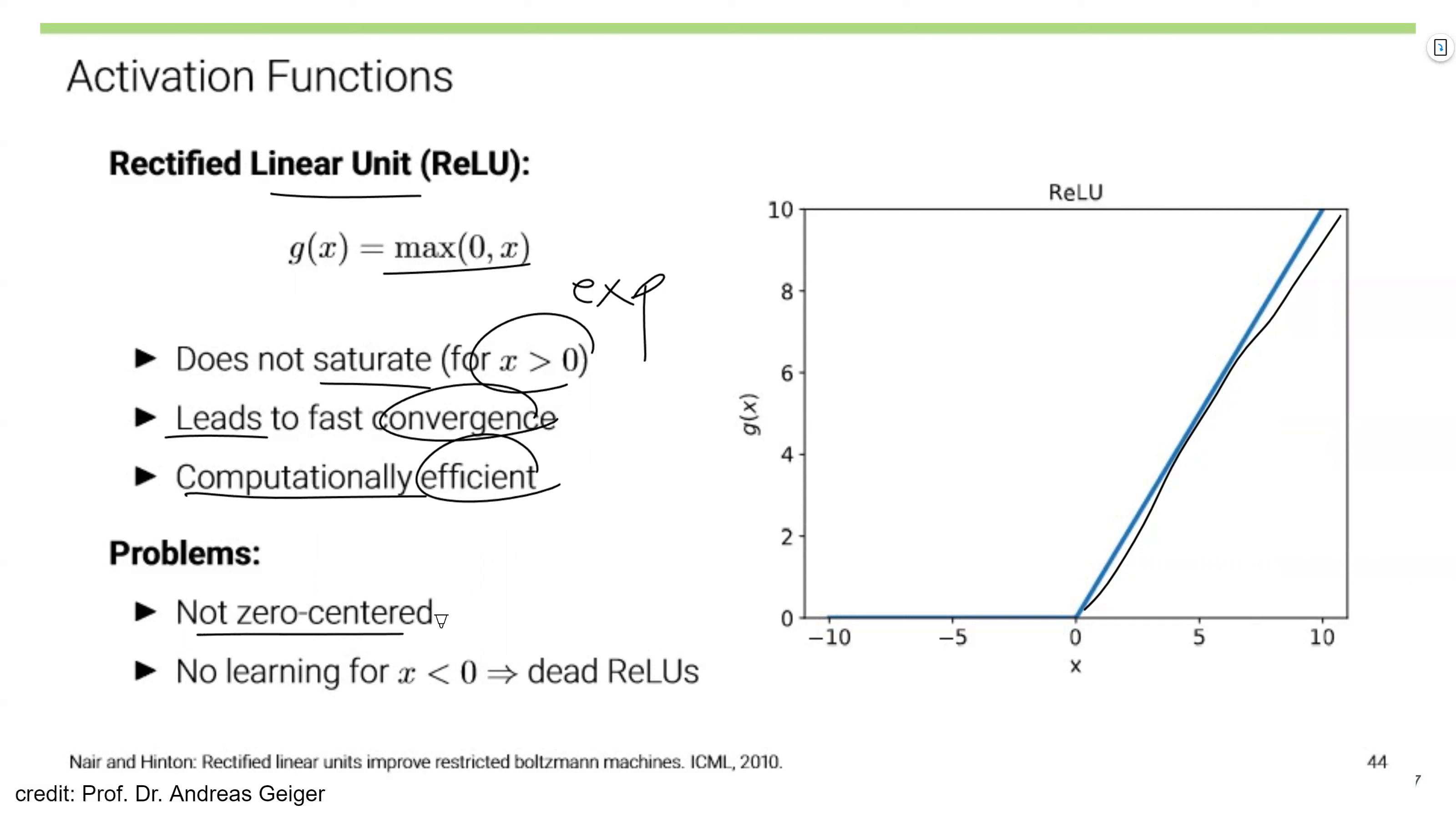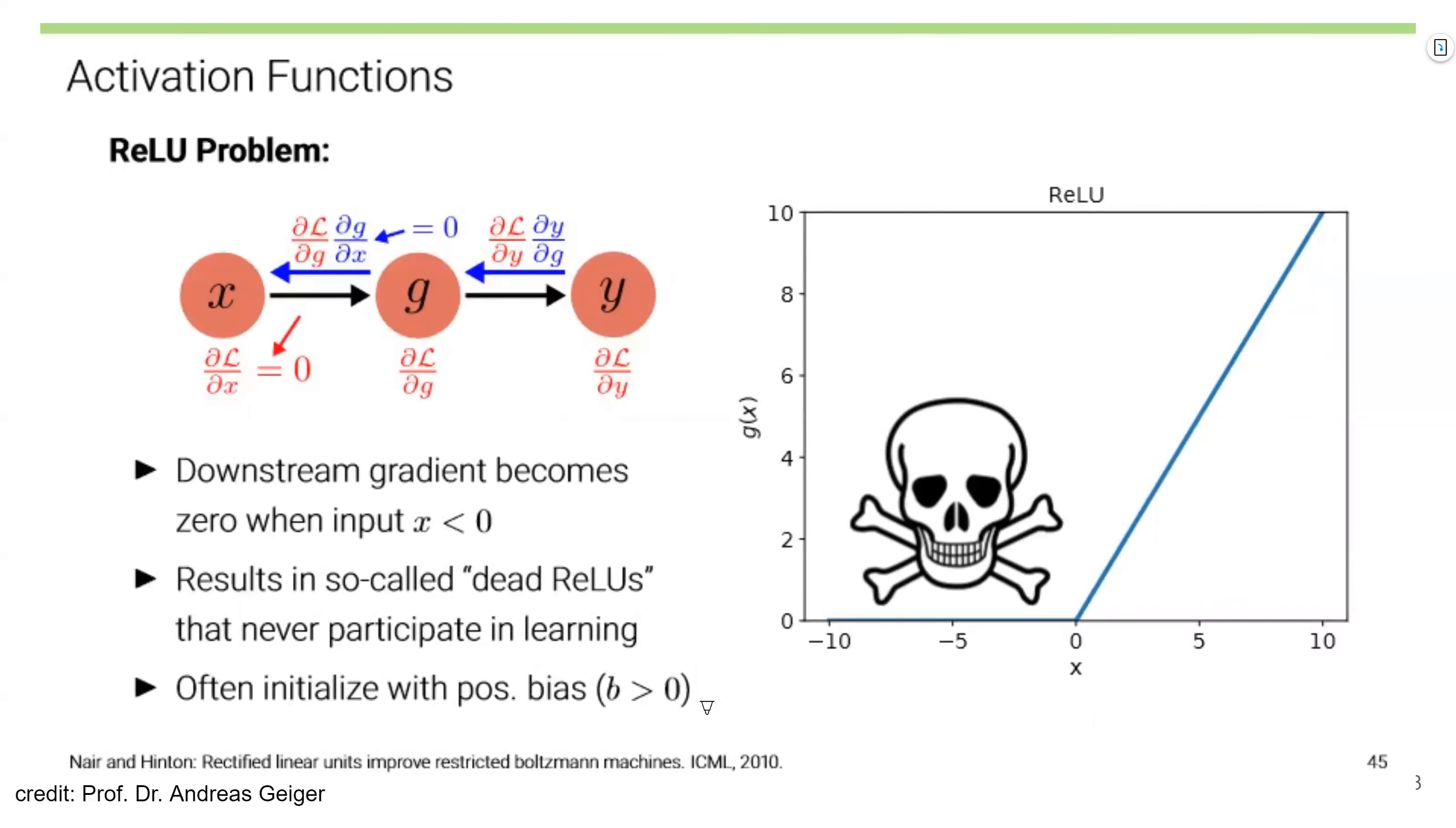And the problem is, it is not zero centered. And for x smaller than 0, there is no learning. And this is called dead ReLU. Downstream gradient becomes 0 when input is smaller than 0 here. So dead ReLU, this part never participates in learning. To avoid this situation, we sometimes often initialize positive bias. So this is some problems that ReLU contains.